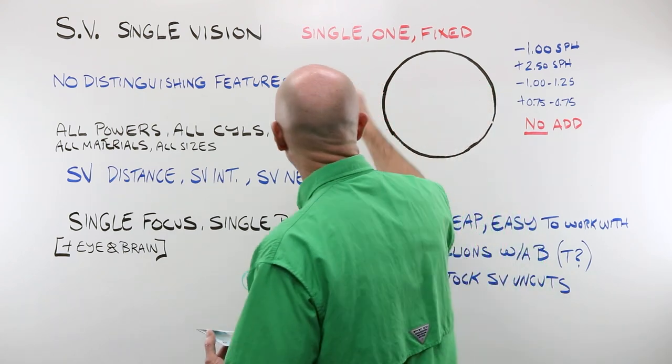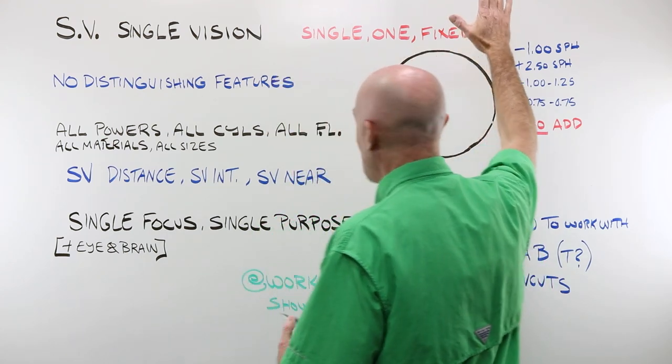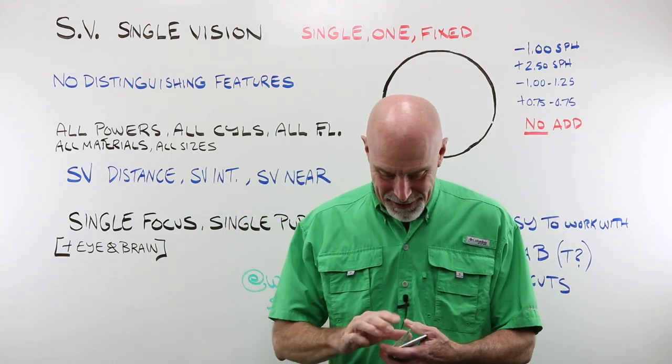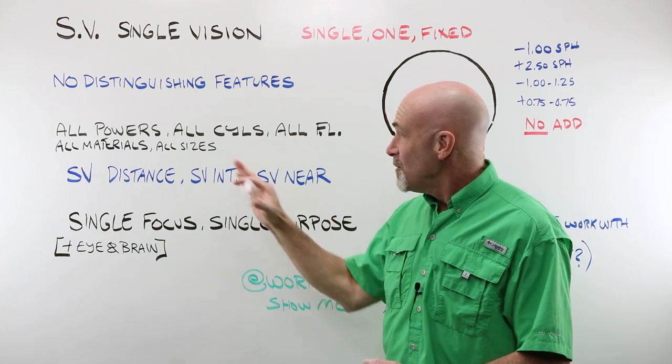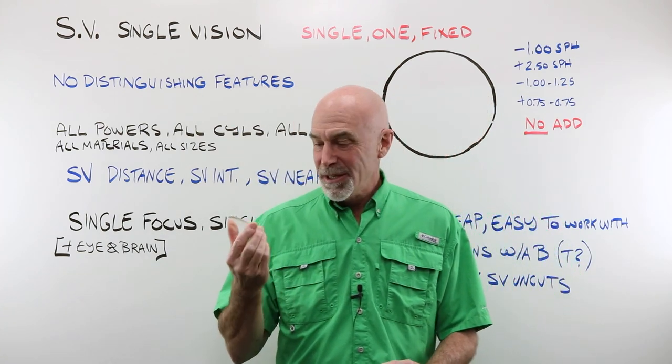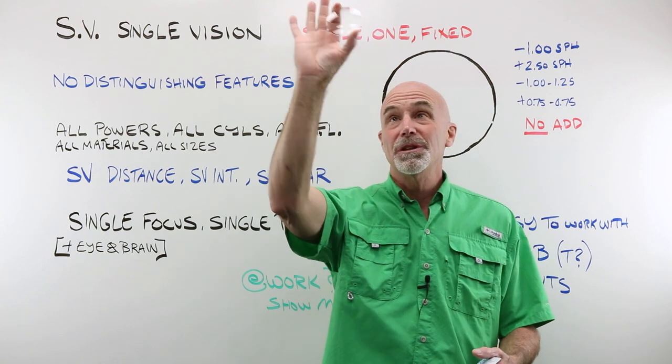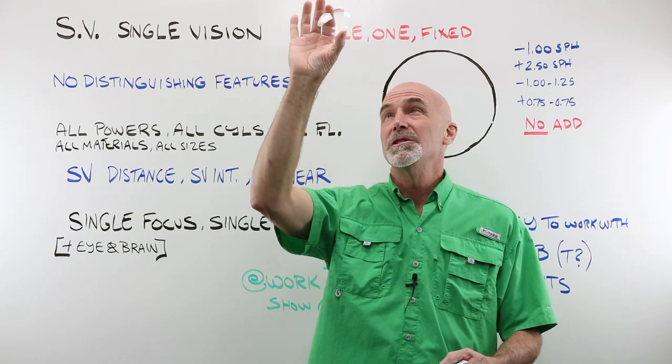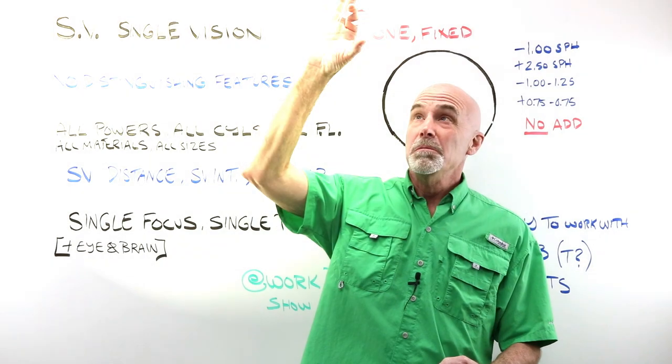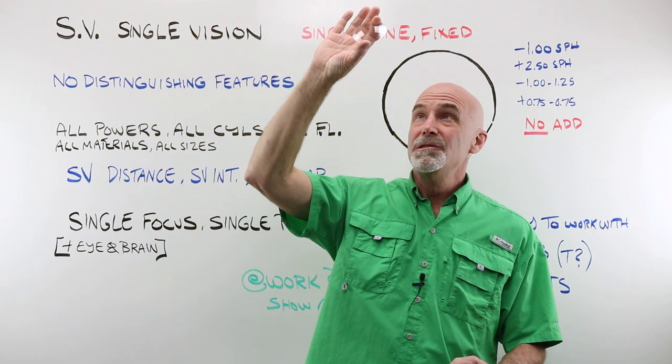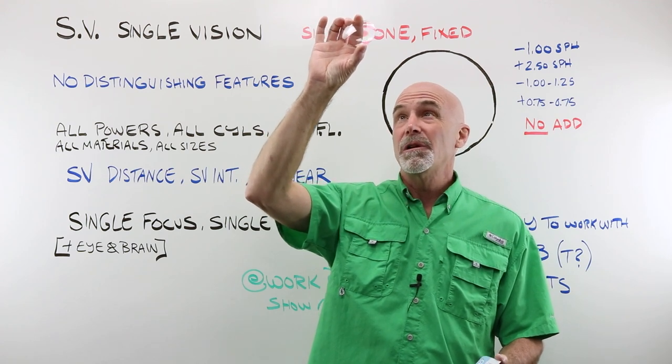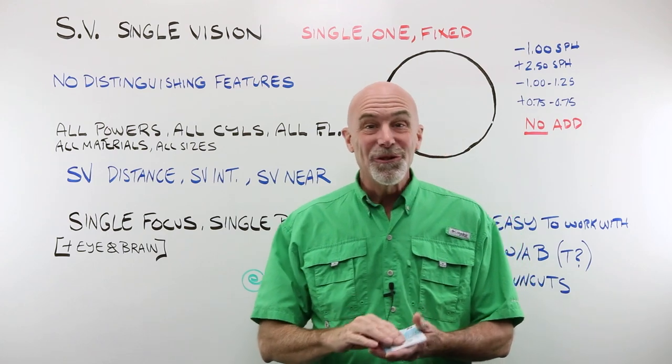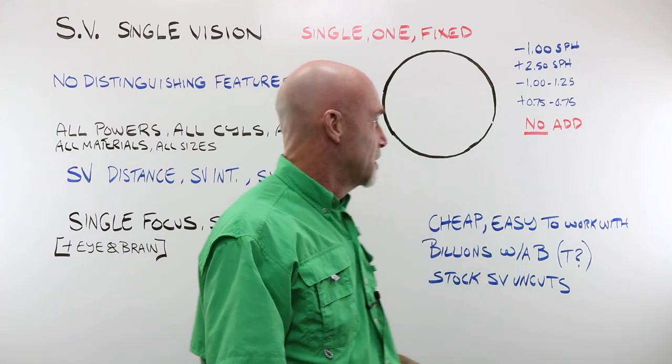Single vision, single, one, fixed. A single vision lens has no distinguishing features of any kind. If I take this lens and I hold it up to the light, there are no laser etchings, no strange blend zones, nothing funky going on. Everywhere I look on this lens, it's the same, good telltale sign that it's a single vision lens.